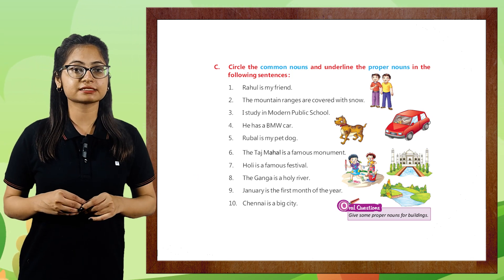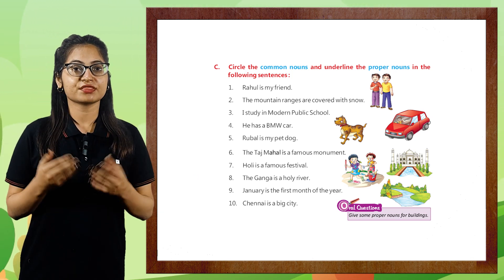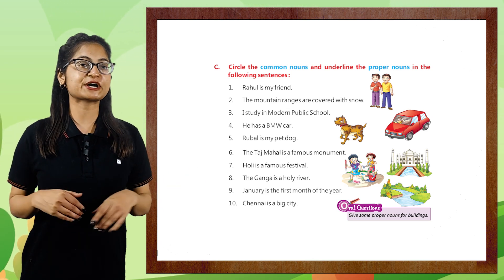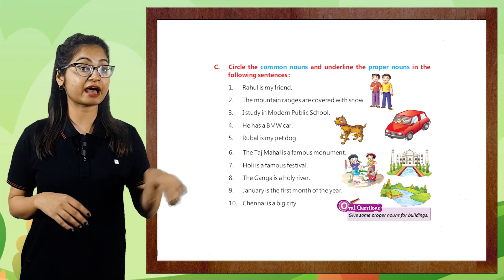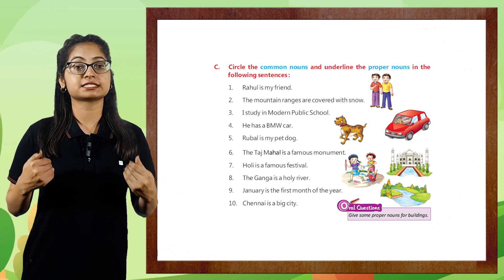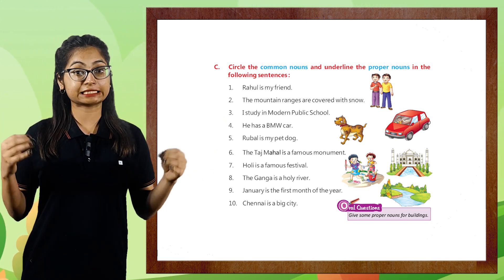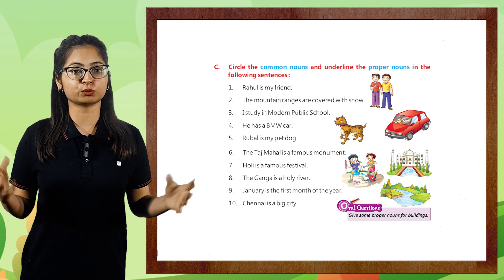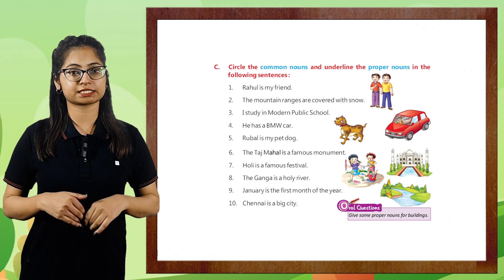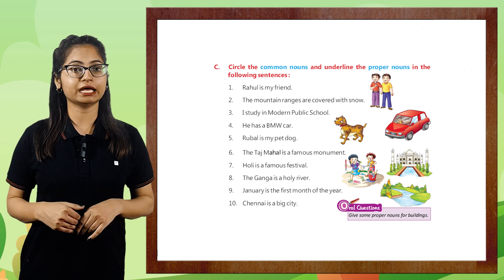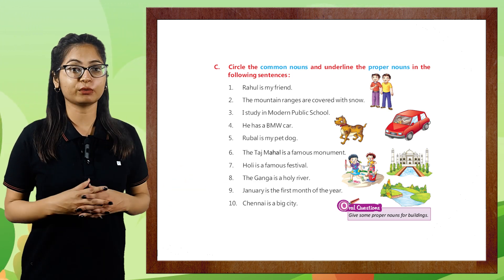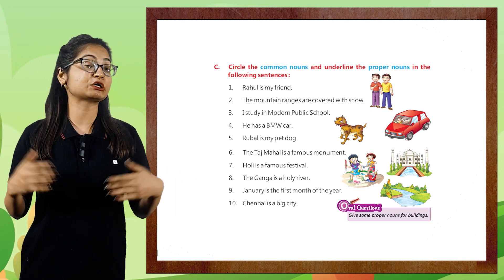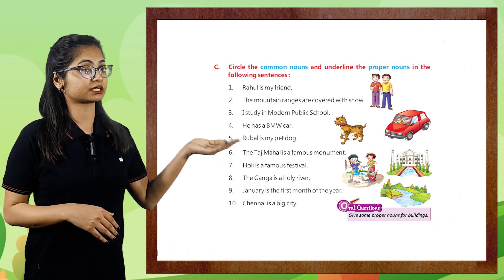Next: 'The mountain ranges are covered with snow.' When we talk about any mountain that hasn't been named, 'mountain' is the common noun. Next: 'I study in Modern Public School.' Here, 'I' is a common noun and 'Modern Public School' is a proper noun. Next: 'He has a BMW car.' 'Car' could be any car, so car is a common noun and BMW is a proper noun.